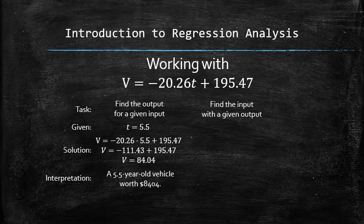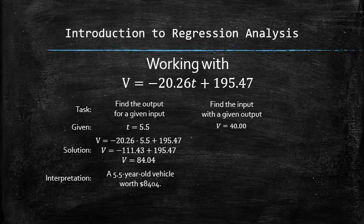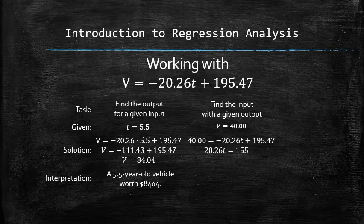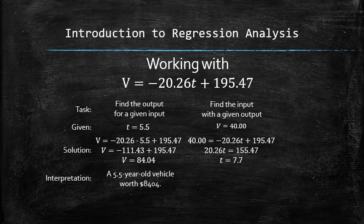We can also estimate the age of a vehicle that's worth $4,000 by plugging in the given value of v into the equation and solving the equation for t. For $4,000 we can get a 7.7 year old vehicle.